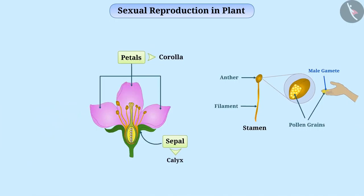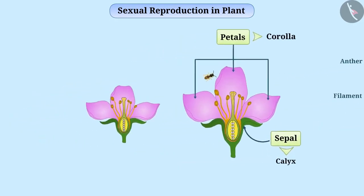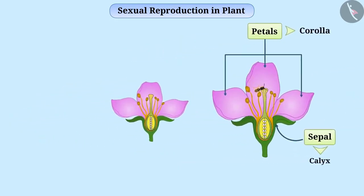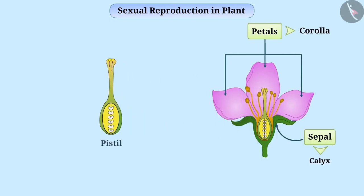The colour of petals and their fragrance attract insects. These insects play an important role in moving pollen grains from one flower to another. In the centre of the flower, you will see a jug-like part. It is called the pistil. It is the female reproductive part of the plant and it has three parts.